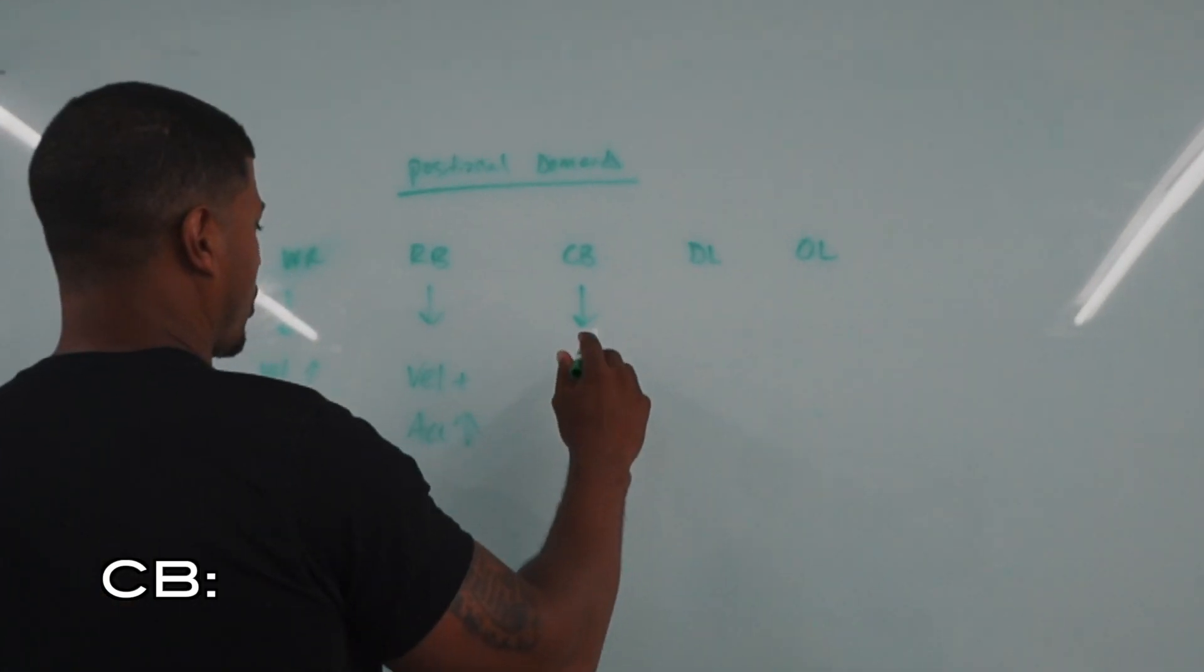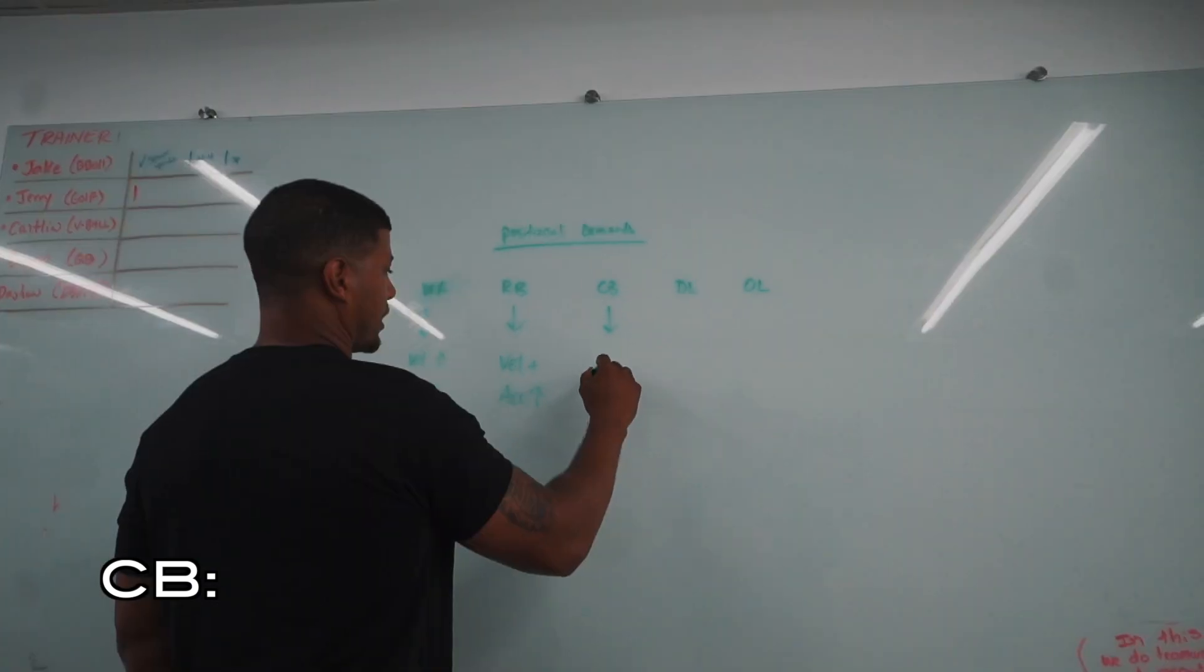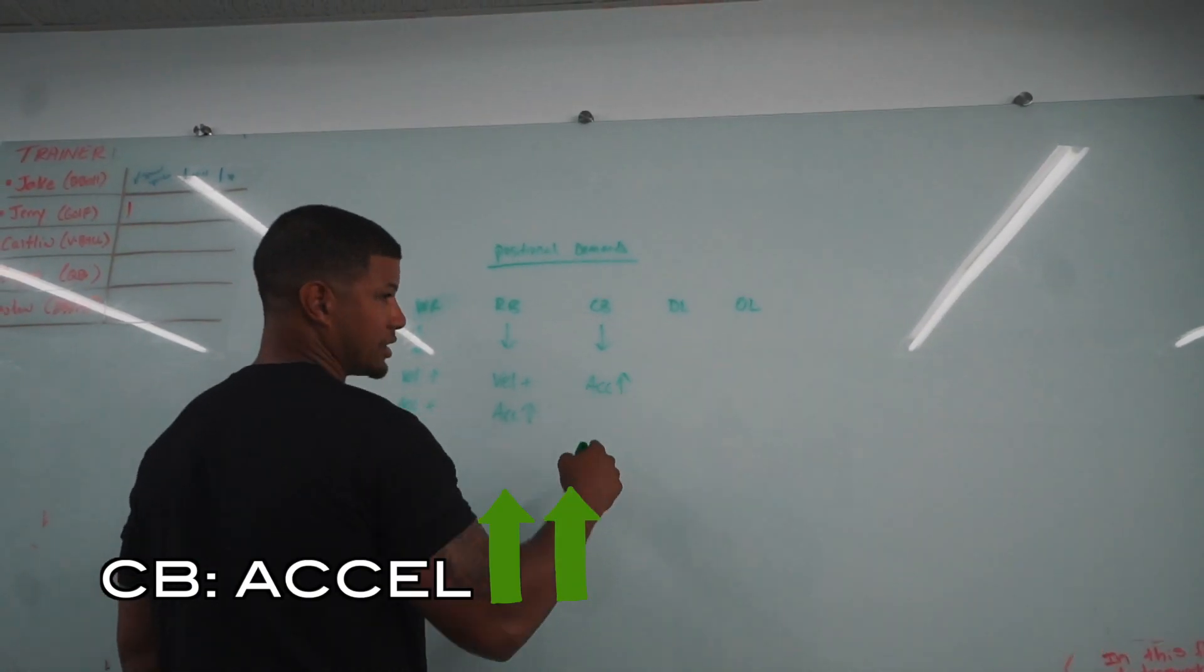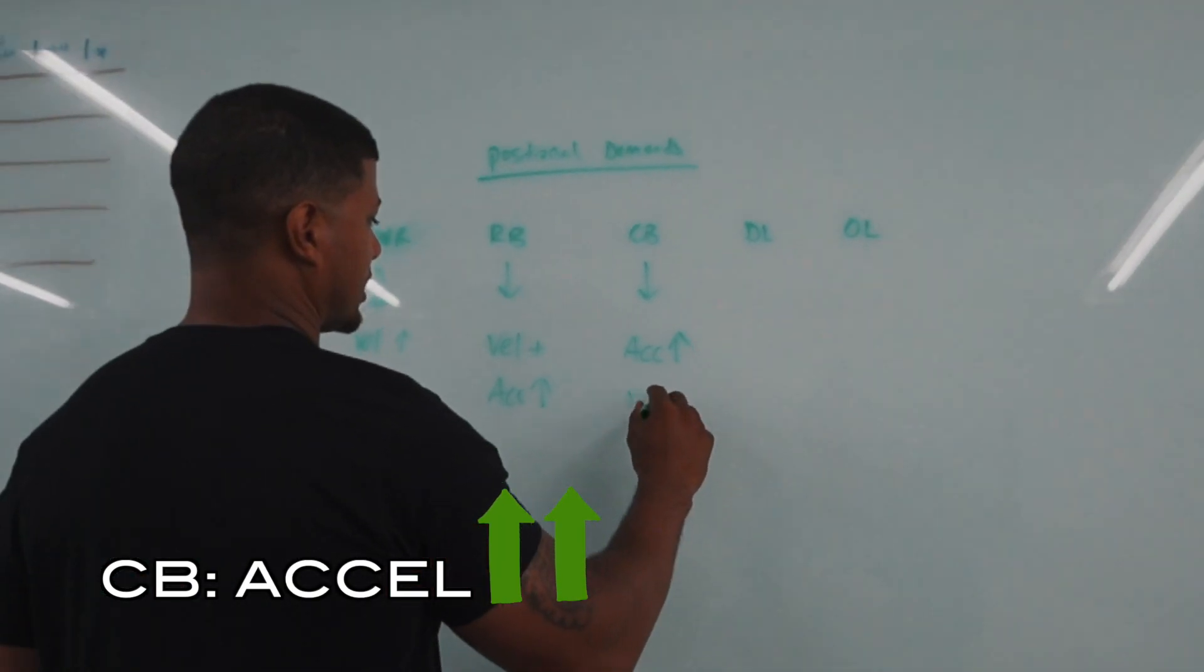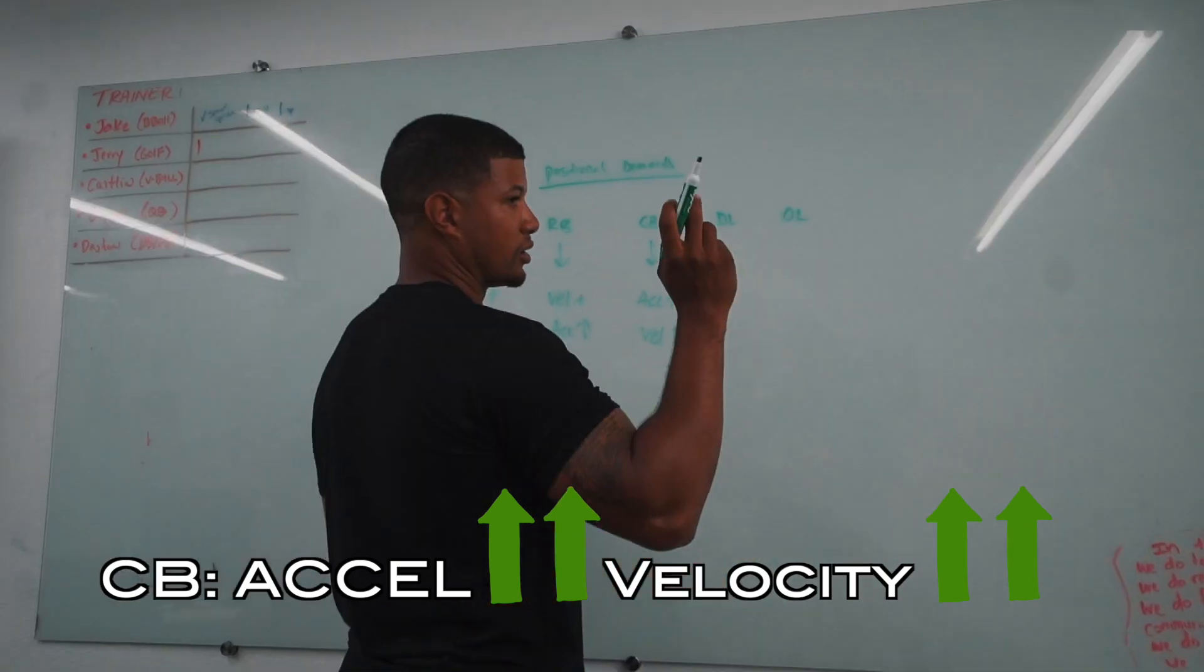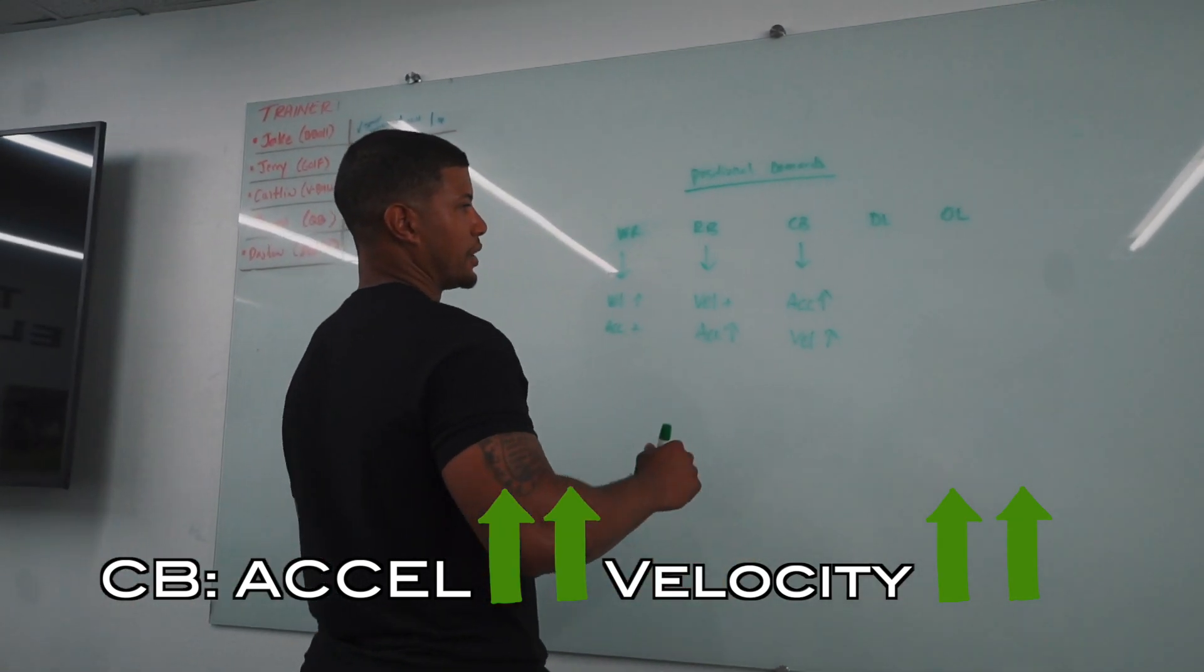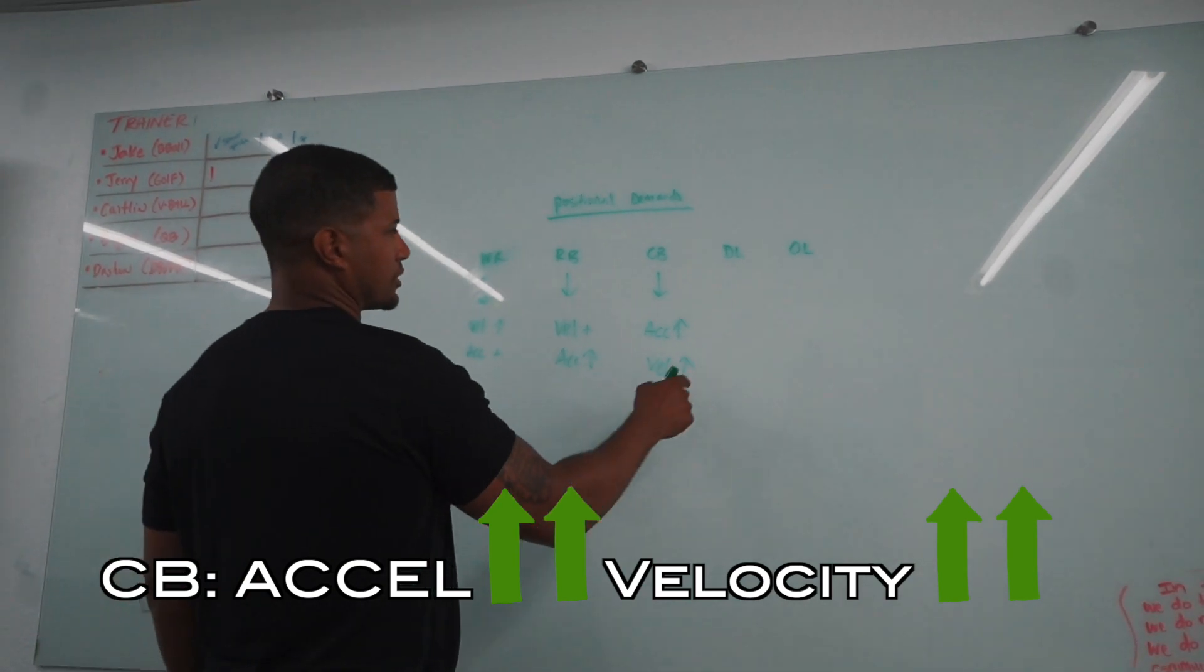Look at a corner. A corner is probably going to be one of your faster players out there. So they need to have crazy high acceleration to break on the ball, but also crazy high velocity just in case the ball gets thrown over top or they have to catch a player. So already we have three different prototypes.